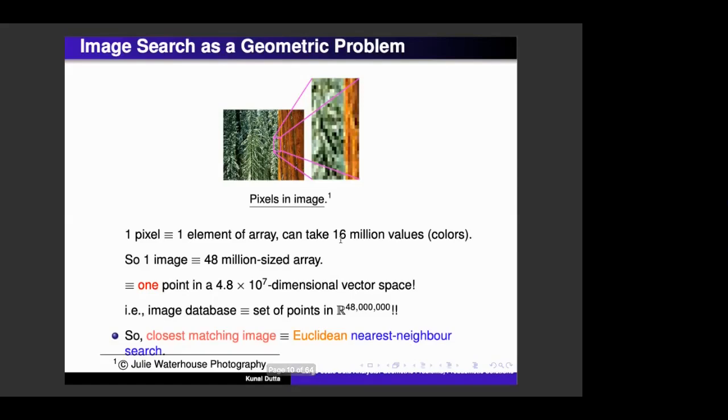And your closest matching image problem becomes a Euclidean nearest neighbor search problem. So this was just a very oversimplified, naive example. This is not how it is done in practice, but it captures the problem of image search as a problem in a high dimensional geometric space.